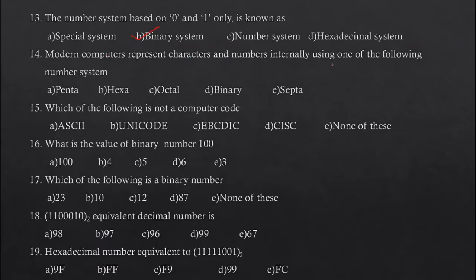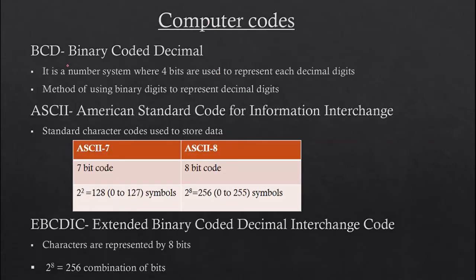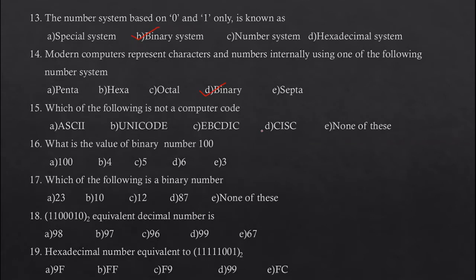Modern computers represent characters and numbers internally using the binary number system. The next question asks which of the following is not a computer code. The codes include ASCII — American Standard Code for Information Interchange — and EBCDIC — Extended Binary Coded Decimal Interchange Code. The answer is option D: CISC.